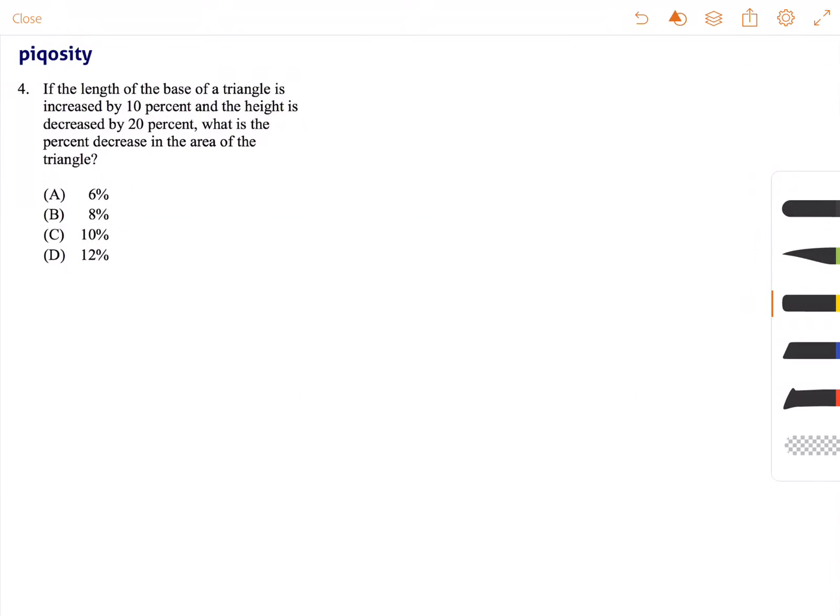This is Stephen, and this question deals with your knowledge of percentages and finding the area of triangles. The question reads: if the length of the base of a triangle is increased by 10% and the height is decreased by 20%, what is the percent decrease in the area of the triangle?